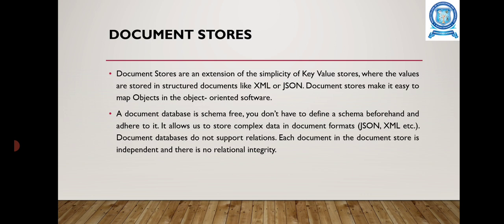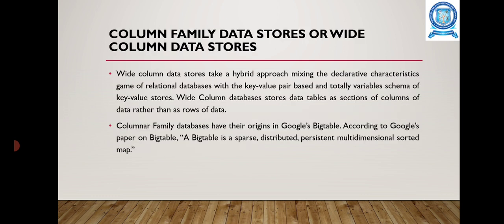A document store is an extension of the simplicity of the key-value store, where values are stored in a structured document format like XML or JSON. A document database is schema-free — you don't have to define a schema and adhere to it. It allows storing complex data in document format. Document databases do not support relations; each document in the document store is independent.